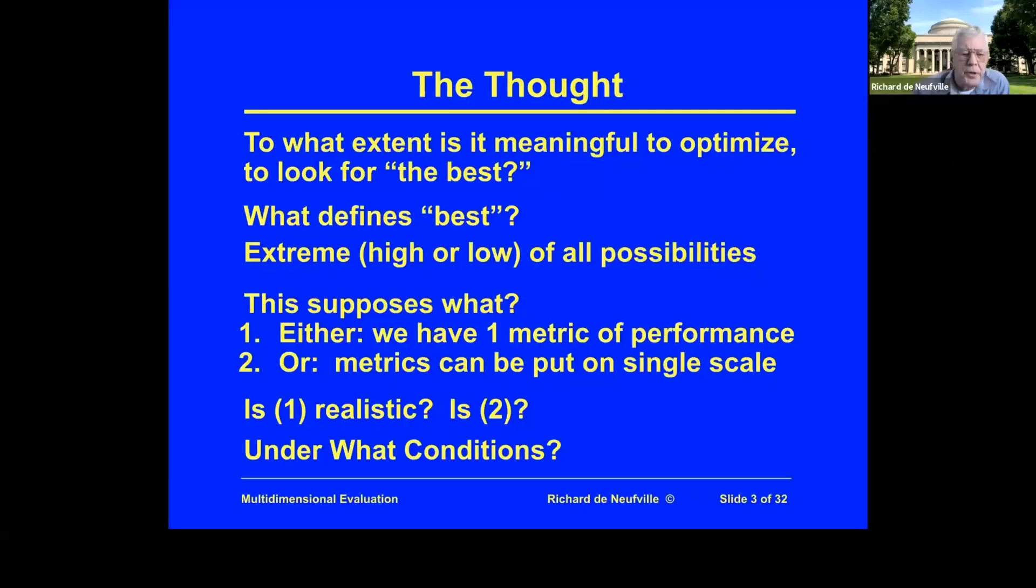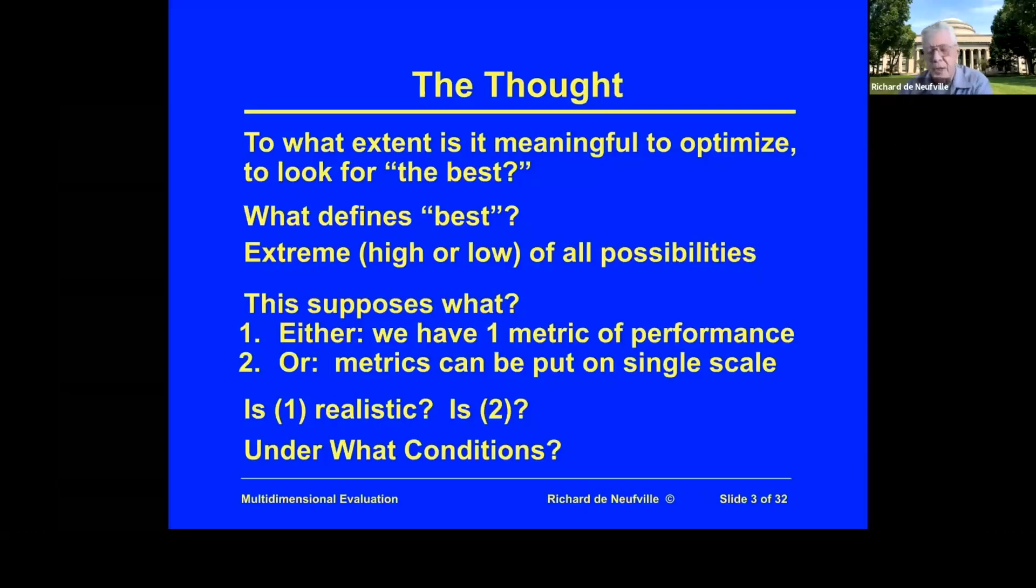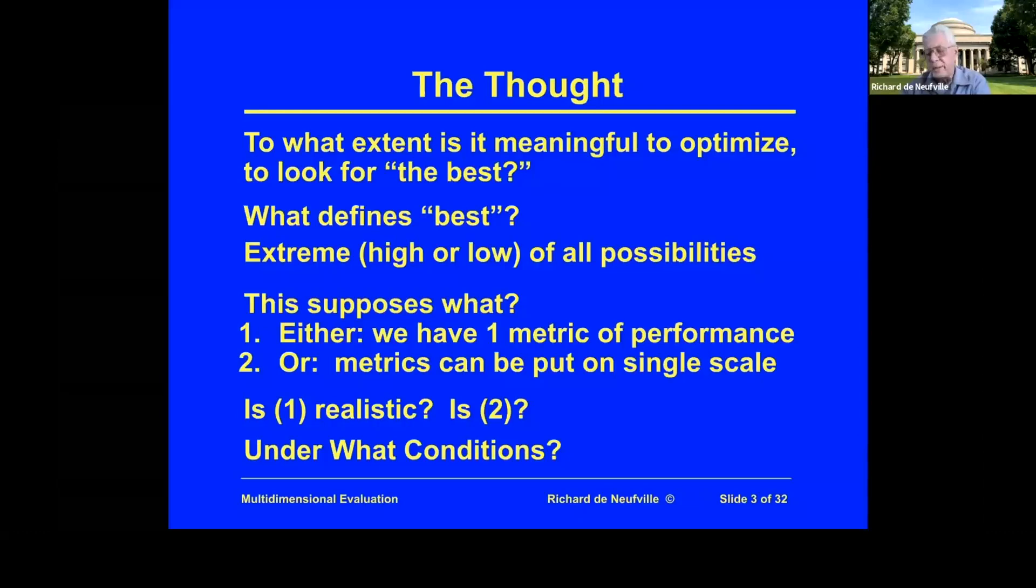The basic question is: is either one or two realistic? Is it really possible that we're going to have a single metric of performance for any of our systems? And is it even possible that if we don't have a single metric, it's realistic to put everything on a single scale in a way that's acceptable? Are we going to say one life equals $3,822, or 10 times as much? Is that kind of analysis, that weighting, possible? Just think about that for a moment. In some ways, you'd say, well, of course not.